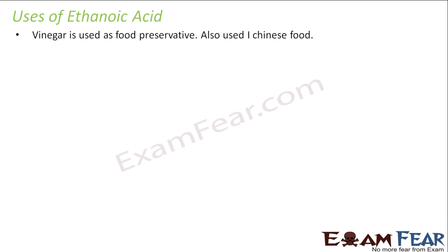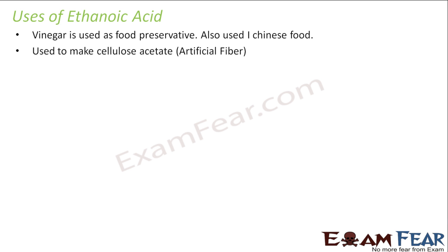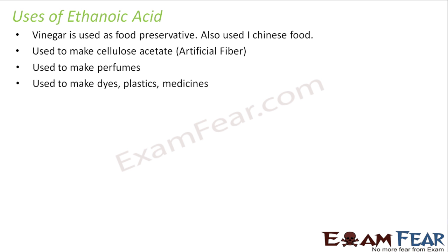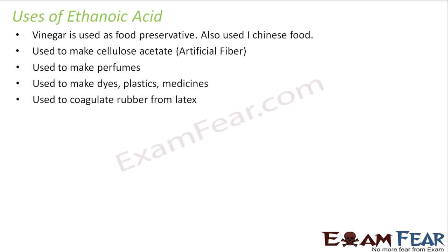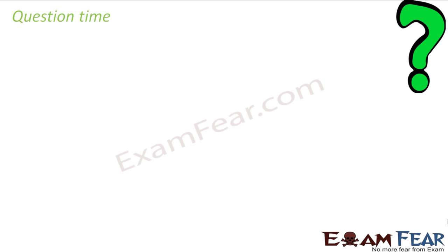The uses of ethanoic acid: it is used for vinegar. It is used to make cellulose acetate, which is an artificial fiber for clothes. It is used to make perfumes, dyes, and plastic substances. It is also used to coagulate rubber from latex — when you prepare rubber from latex, this acid is used to coagulate it.